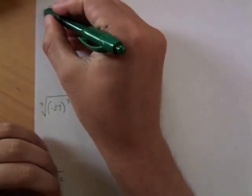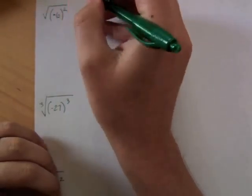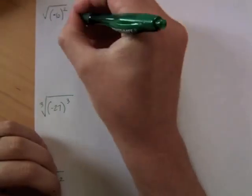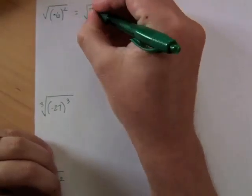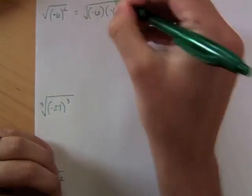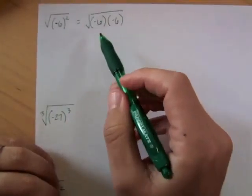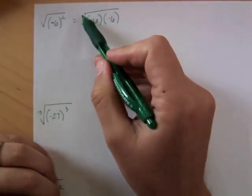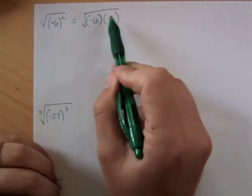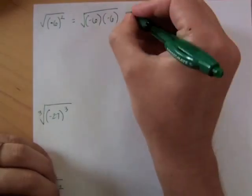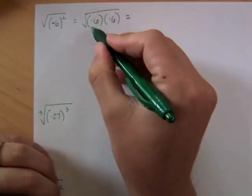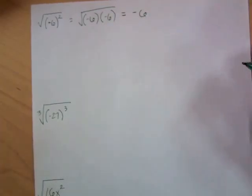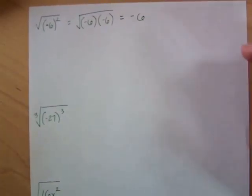A square root means a number multiplied by itself. And negative 6 squared means negative 6 times negative 6. So we could rewrite this as negative 6 times negative 6 — that's what negative 6 squared means. When you're doing a square root, you're looking for something multiplied by itself. Well, here we have negative 6 multiplied by negative 6, so the square root would seem to be negative 6. Negative 6 is a very reasonable guess for an answer to this problem.